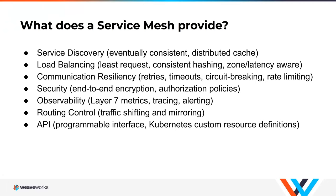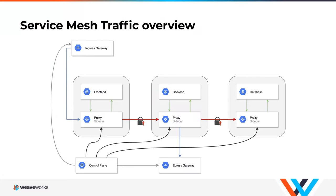Security is another important feature with two aspects: end-to-end encryption using mTLS, and authorization policies. For example, if someone gains access to your front-end app through a vulnerability, the front-end should never connect directly to the database — everything should go through the back-end. Without a service mesh, nothing stops an attacker from going directly from the front-end to the database. With a service mesh, you can put policies in place so only applications that need to talk to the database are able to issue connections to it — another layer of protection.